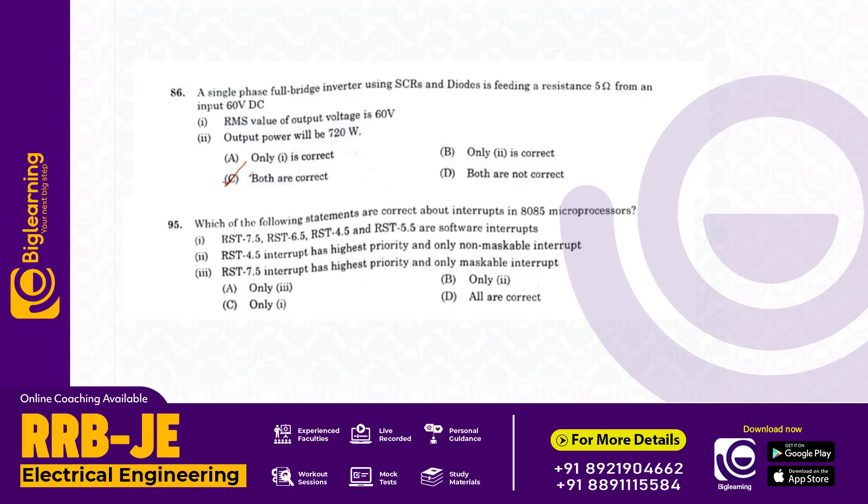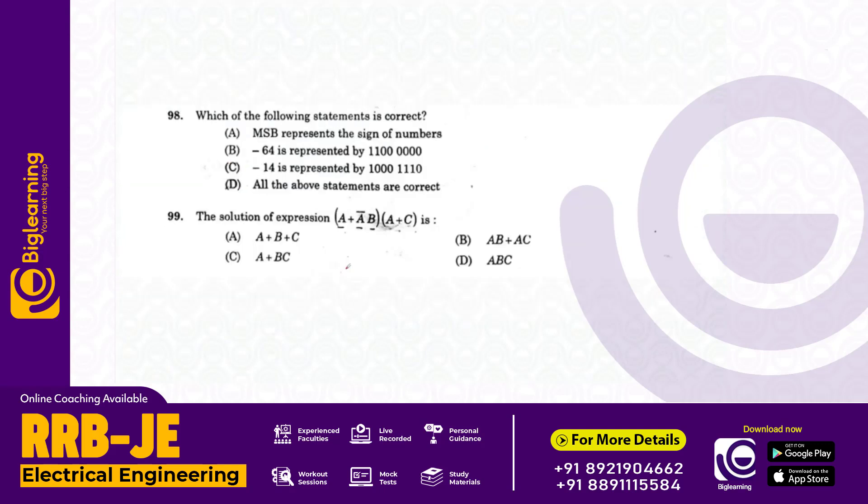Which of the following statements are correct about interrupts in 8085 microprocessor? RST 7.5, 6.5, and 5.5 are hardware interrupts. Trap interrupt has the highest priority and is a non-maskable interrupt. Answer B: only statement two.